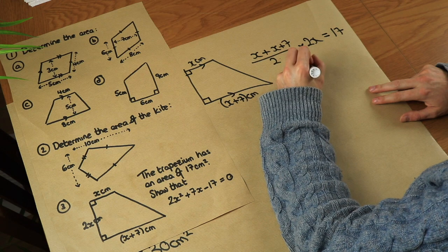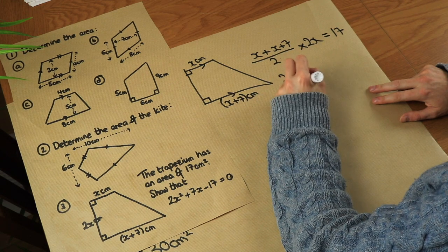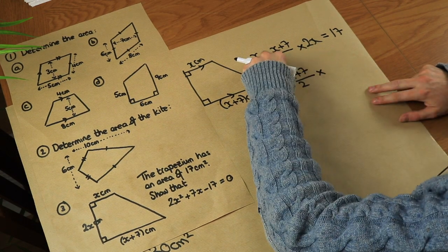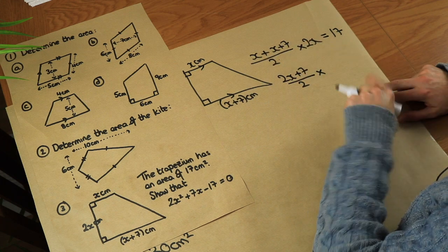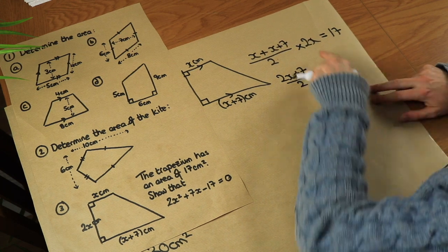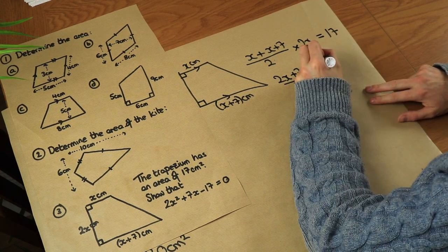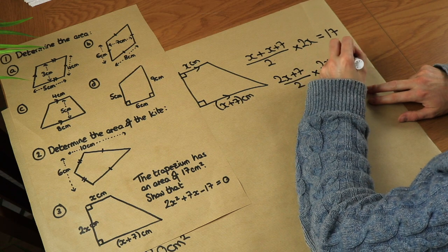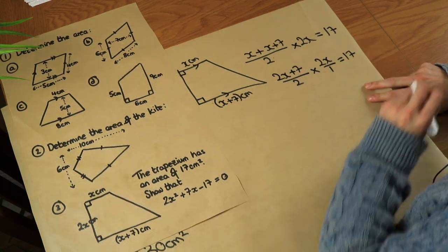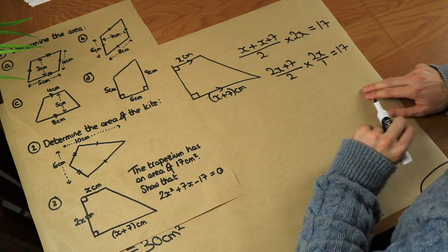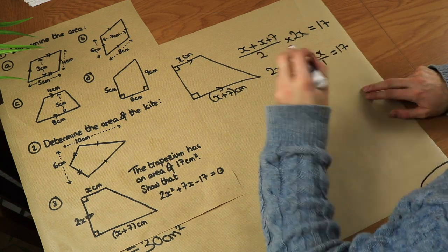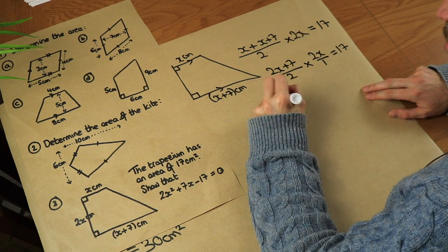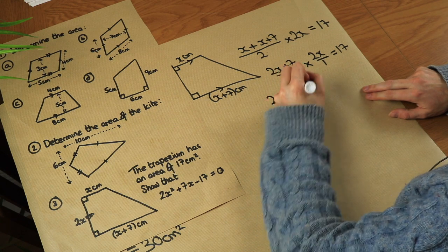So we have (2x + 7) over 2, times 2x. Multiplying a fraction by a non-fraction — we can turn that non-fraction into a fraction by putting it over 1, which allows us to combine the two fractions. So we get 2x(2x + 7) over 2 times 1, which is over 2.